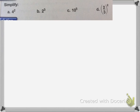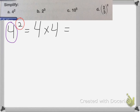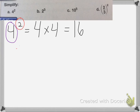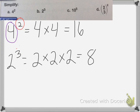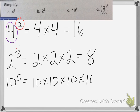So I need to simplify these numbers. If I have 4 squared, the exponent tells me how many times I'm going to multiply the number by itself. So I'm going to multiply 4 by itself 2 times, so it's 4 times 4, which equals 16. Don't get confused — it's not 4 times 2, that's wrong. It's 4 times 4. The next one: 2 to the 3rd power equals 2 times 2 times 2, which is 8. The last one: 10 to the 5th power equals 10 times 10 times 10 times 10 times 10, which is 100,000.